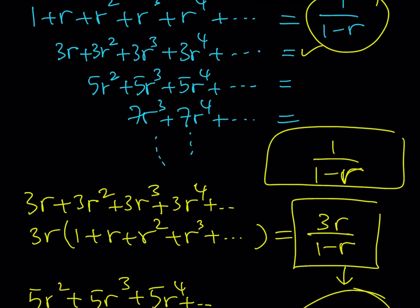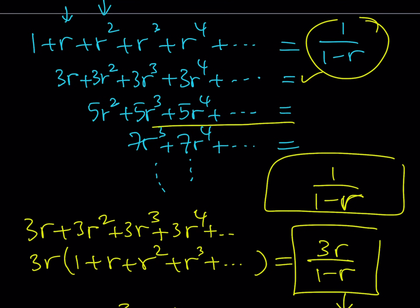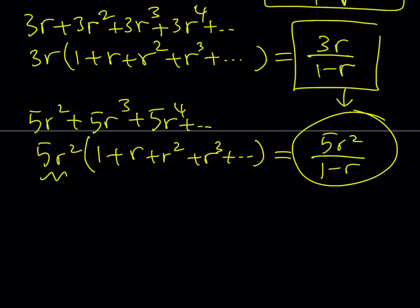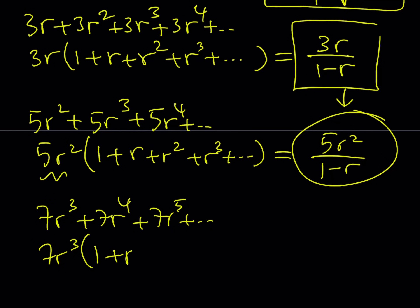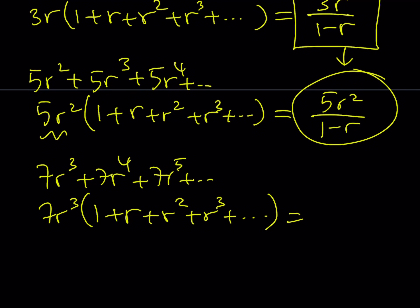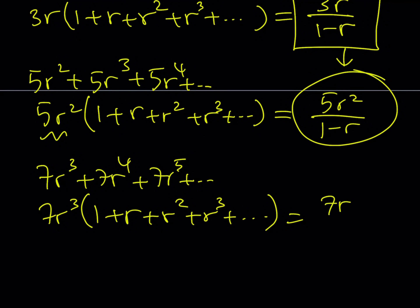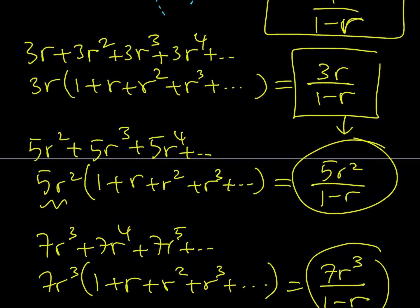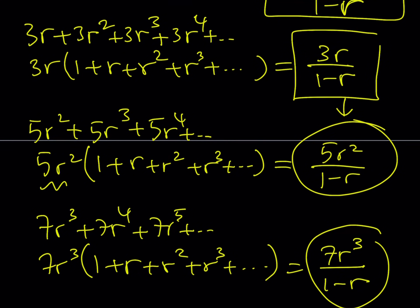The next series has 7 in it. It starts with 7r cubed plus 7r to the fourth plus 7r to the fifth, and so on. This can be written as 7r cubed times the quantity 1 plus r plus r squared plus r cubed and so on. The expression inside the parentheses is 1 over 1 minus r, so multiplying by 7r cubed gives 7r cubed over 1 minus r. We were able to express the first four sums in terms of r.